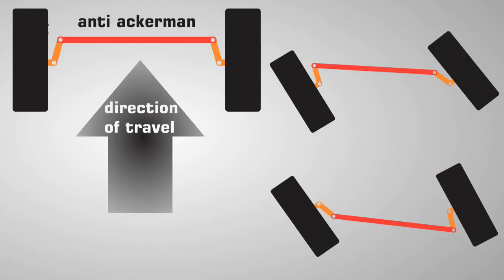Now let's move towards something more exciting. This is opposite to the Ackermann — the anti-Ackermann. This geometry is preferred by racing cars, and we will get into why.